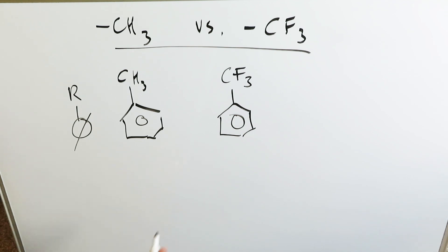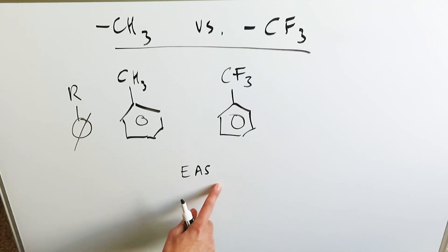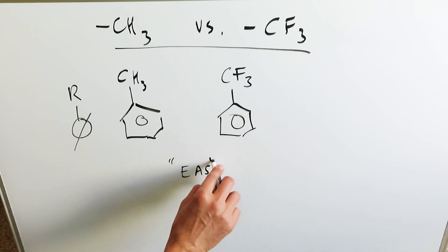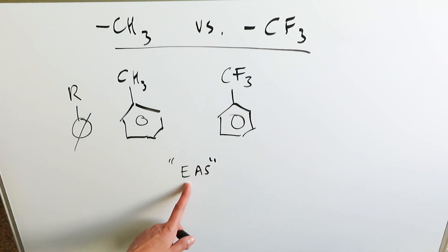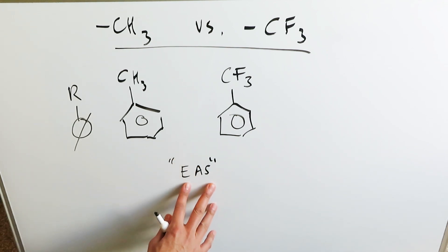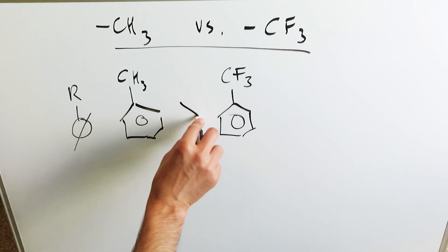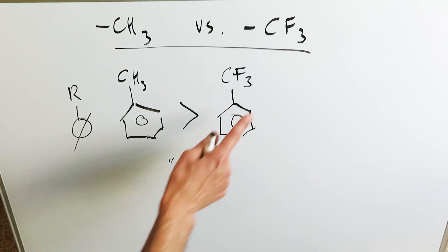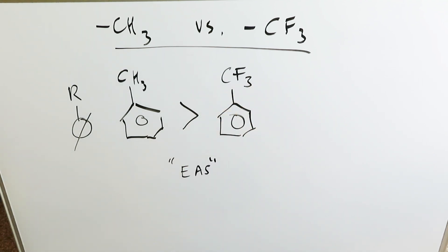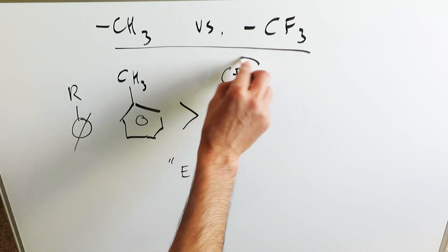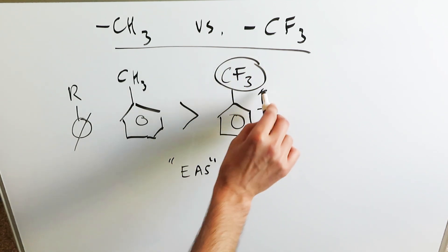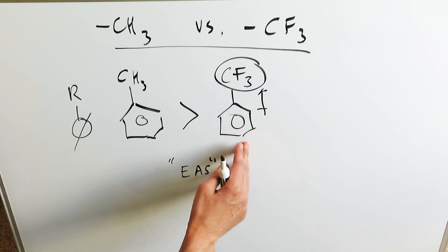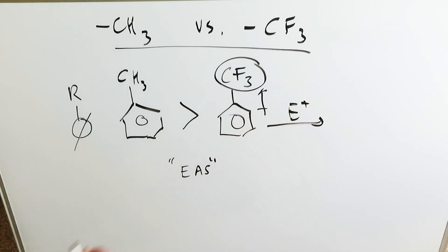In terms of electrophilic attack on a benzene ring — sometimes symbolized EAS, or electrophilic aromatic substitution — when you look at the rate of electrophilic attacks, methyl benzene is much faster than trifluoromethyl benzene because the methyl ring is activated. The trifluoromethyl ring is deactivated due to the highly electron withdrawing substituent. The trifluoromethyl group is sucking electrons away, making it deactivated, so adding an electrophile there is a slower reaction.